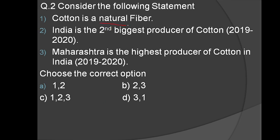Cotton is a natural fiber — yes, this is true. India is the second biggest producer of cotton in 2019-2020 — yes, this is also true. Maharashtra is the highest producer of cotton in India — this is not correct. The correct answer is Gujarat. So the first and second statements are correct, meaning option A is correct.